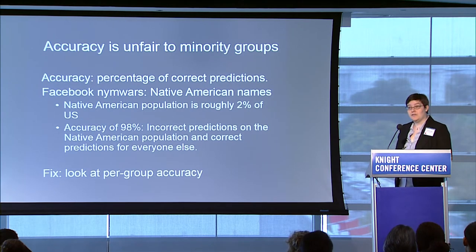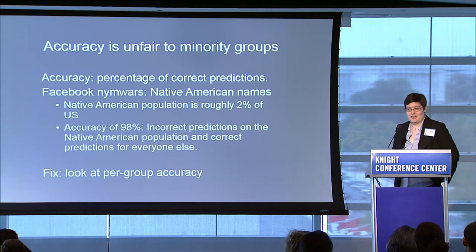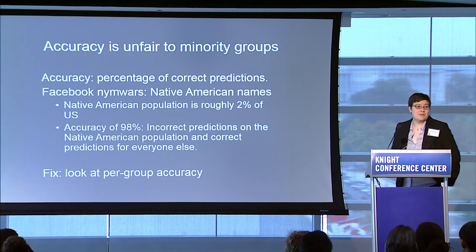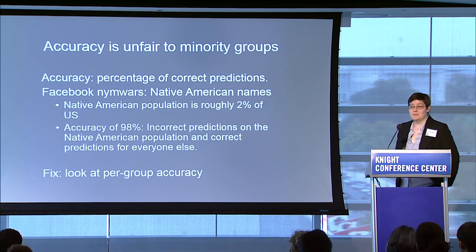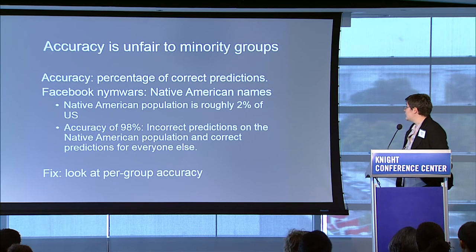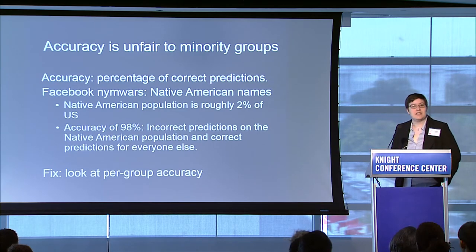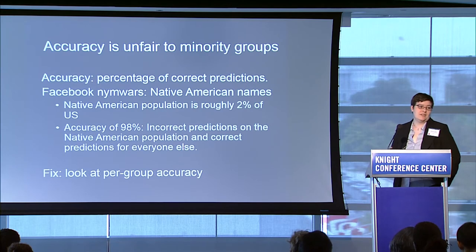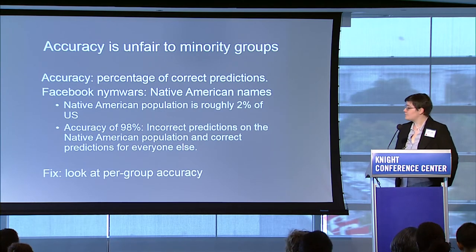But if you dive into it deeper, you'll notice that they had a 0% accuracy on Native American names. That should be seen as a problem. One of the ways of fixing that is just by looking at the accuracy per group and asking: what is the effect of this algorithm, of this policy, per group?